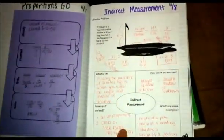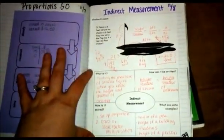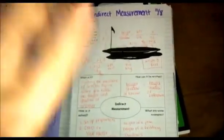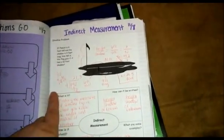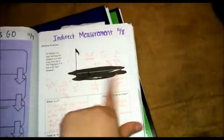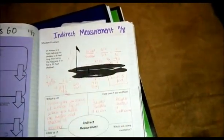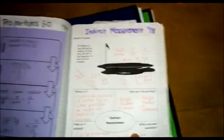And then we went to a lot of this, where we would do a sample problem and a frayer model. My kids really enjoyed this, and so I created a lot of them. We would have a problem. I would always give them some sort of visual, and then we would do the frayer model together.